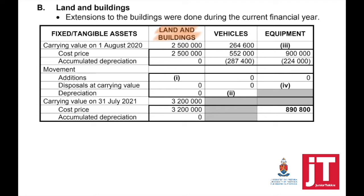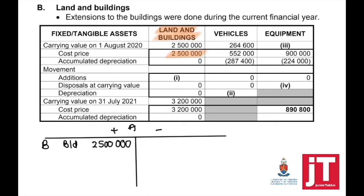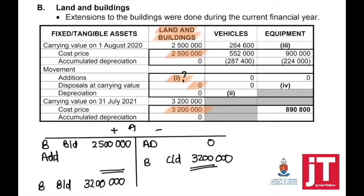Looking at the first question on Land and Buildings, extensions to the buildings were done during the current financial year. I don't need to look at the information to know that there was a movement. If I go to movement, I would see that disposal at carrying value is zero and depreciation will always be zero. But when I look at the balances at the beginning and end, I can see that there's a difference — the balance increased. If the balance increased, it means that we bought more assets. So I start with the opening balance of 2.5 million, plus additions, minus disposal, equals the balance at the end.